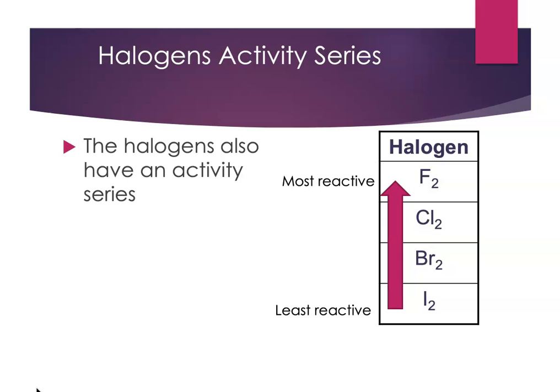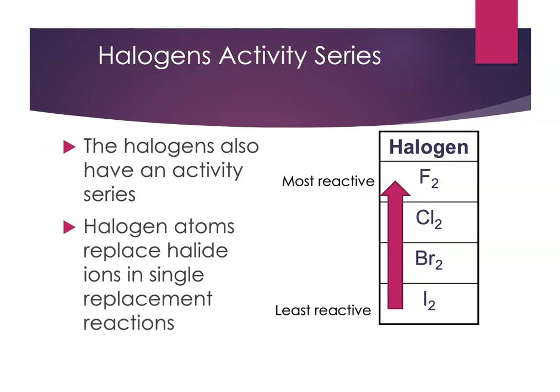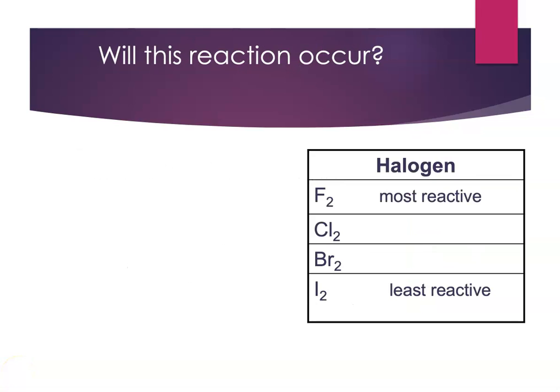One thing you need to keep in mind is that halogen atoms are going to replace halide ions in these single replacement reactions. These are anionic single replacement reactions. Halogens are going to replace halogens. Metals would replace metals. Let's go on and do some problems. Of course, we always have the activity series handy. No one expects you to remember this.